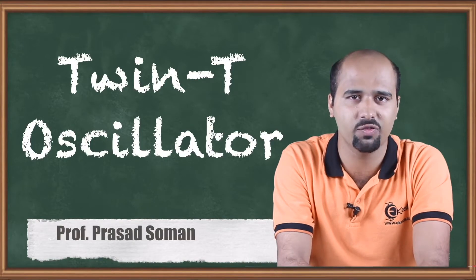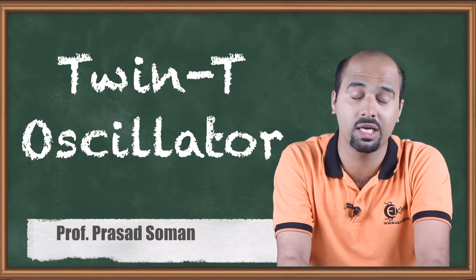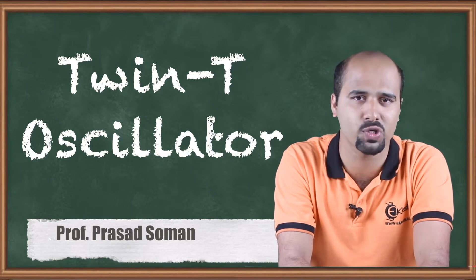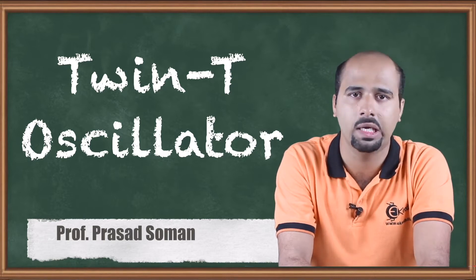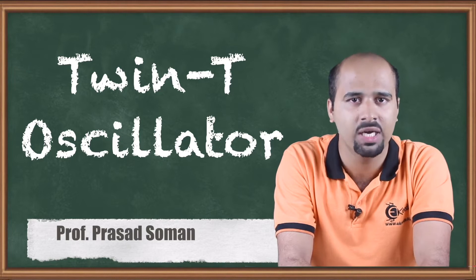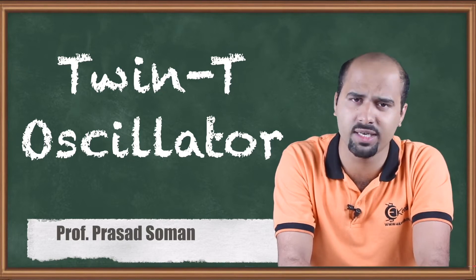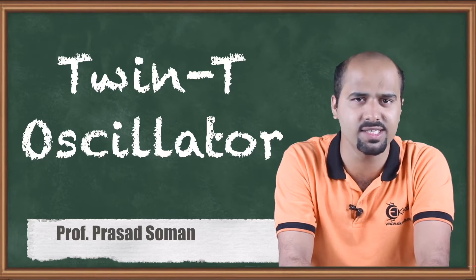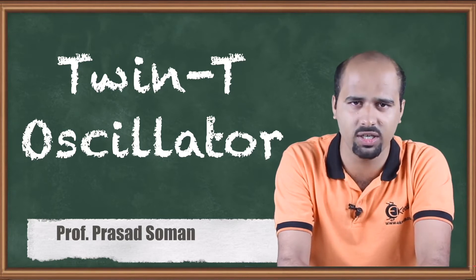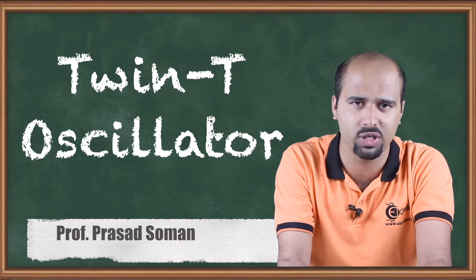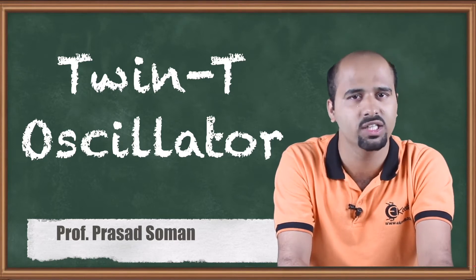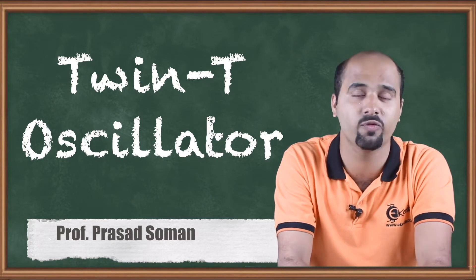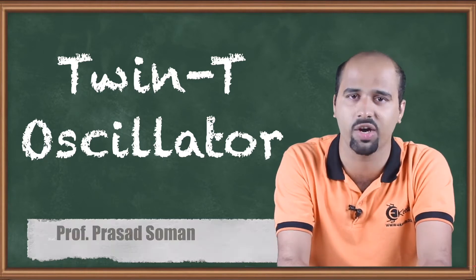Hello guys, here we are dealing with another type of oscillator which is of course a low frequency oscillator. The name is Twin T oscillator. Twin T oscillator is basically a combination of components — resistance and capacitor. Twin T basically means two T networks which are twins, that's why the name is Twin T oscillator. Let's see how it forms the oscillator circuit.